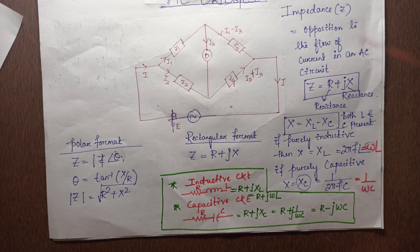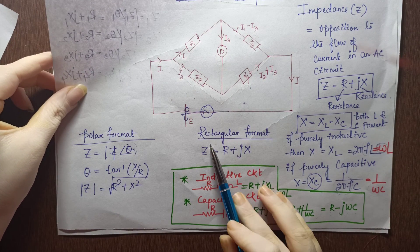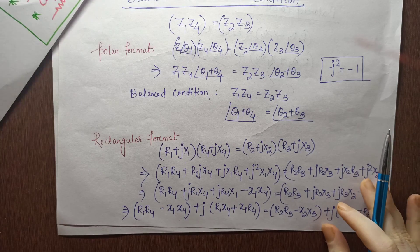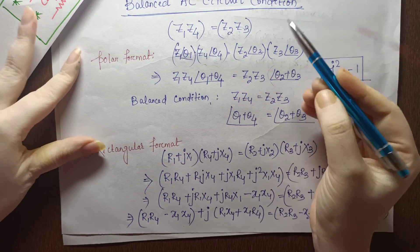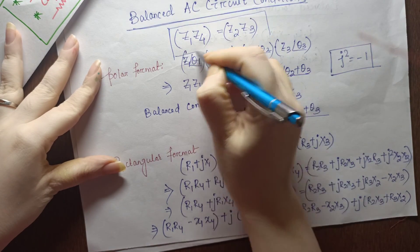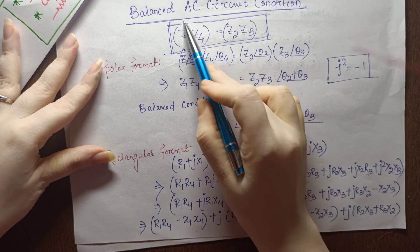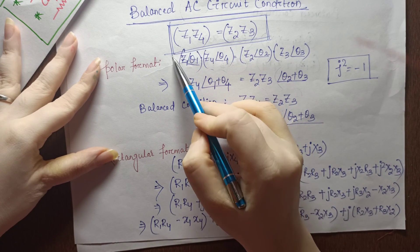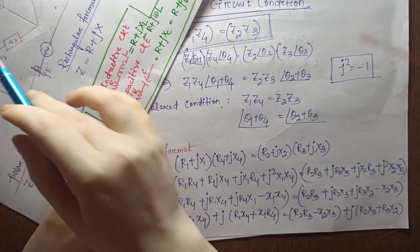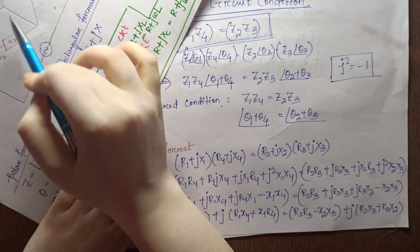Similarly, as we have already discussed the polar format, rectangular format, and how the balanced condition is represented, I will now discuss how this condition was derived. For an AC circuit, the system becomes balanced when Z1 × Z4, that is the opposite arm impedance product, is equal to the product of the other two arms.